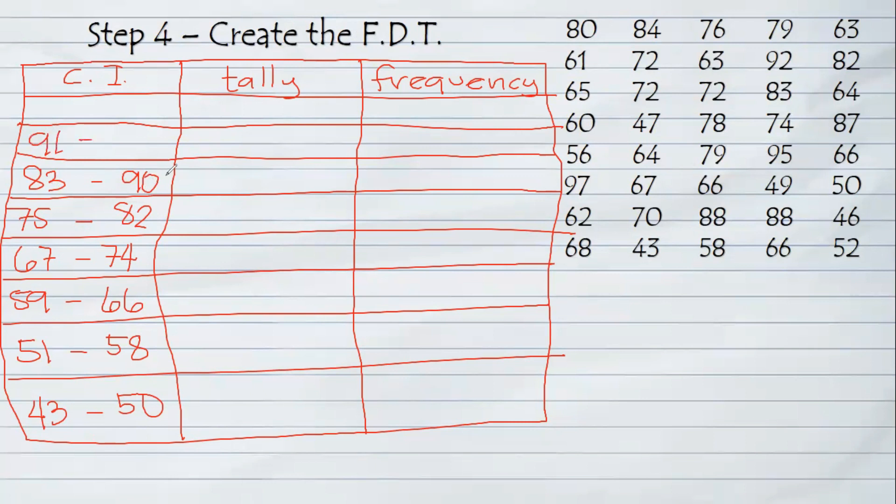The last row would be 91, 92, 93, 94, 95, 96, 97, 98.